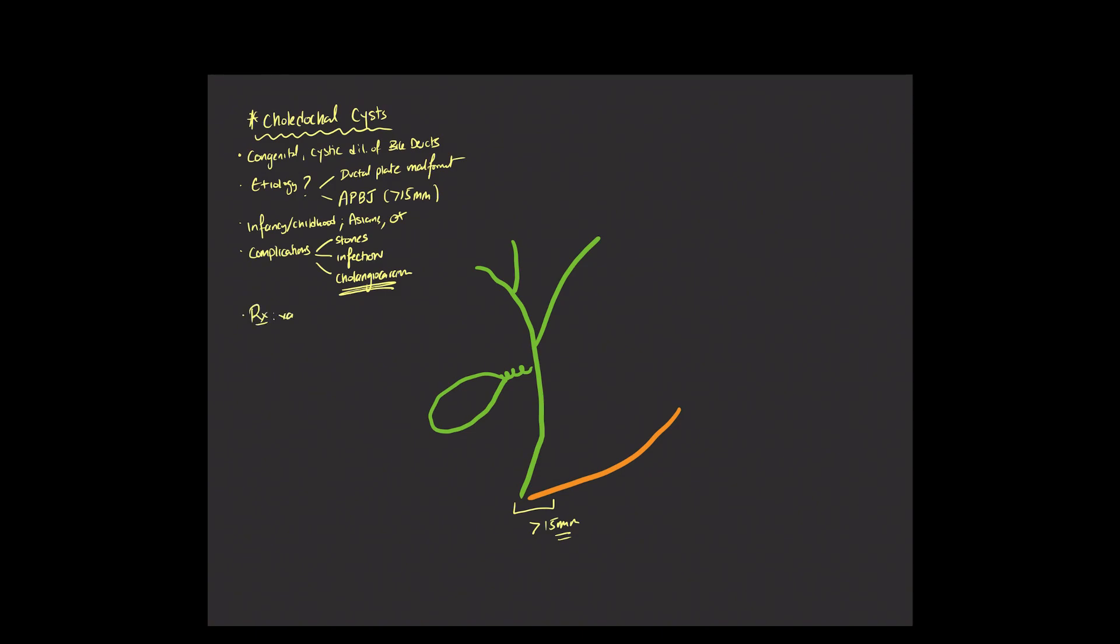And the treatment options will vary depending on the type of choledocal cyst that is present, but generally will require some sort of surgical resection. And if they're too numerous to perform a simple surgical resection, a transplant may be necessary.